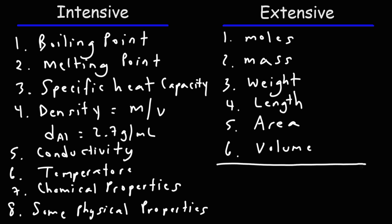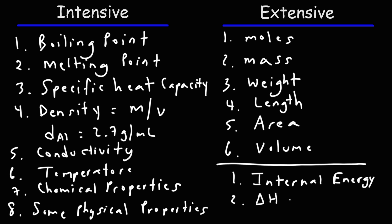There are some other examples of extensive properties. Internal energy is an extensive property. Others include enthalpy (delta H), entropy (delta S), and Gibbs free energy (delta G). If you look at the formulas for these properties, they depend on the number of moles or the quantity of matter associated with them, so that makes them extensive.